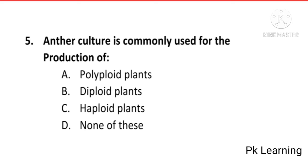Question 5: Anther culture is commonly used for the production of: A. Polyploid plants, B. Diploid plants, C. Haploid plants, D. None of these. The answer is C, Haploid plants. Anther culture is commonly used for the production of haploid plants, C is the correct option.